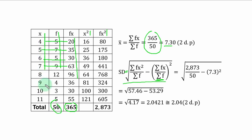So you square the x column for you to get x squared. 4 squared is 16. 5 squared, 25. 6 squared, 36. 7 squared, 49 and so on.